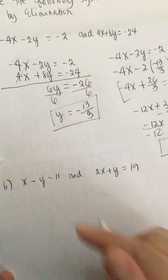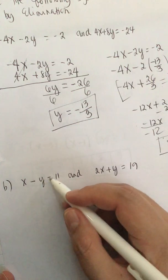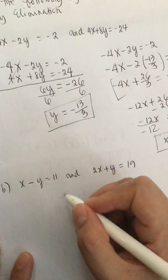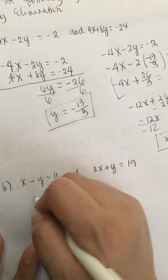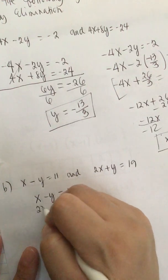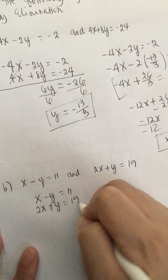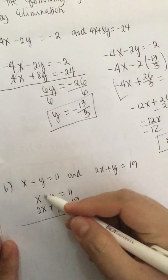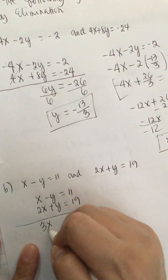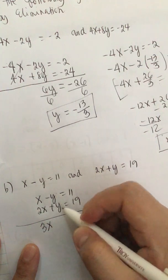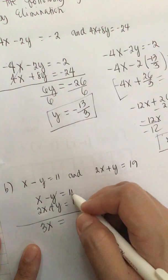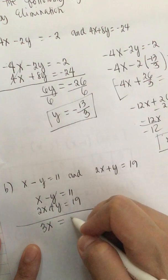So next problem. x - y = 11 and 2x + y = 19. So we add these two equations. So x + 2x is equal to 3x. -y + y is 0y, so they cancel. So this is equal to 11 + 19 is 30.